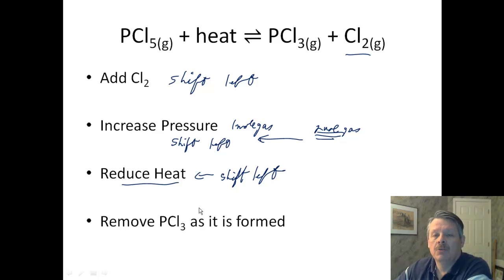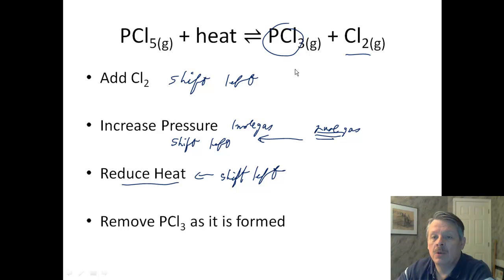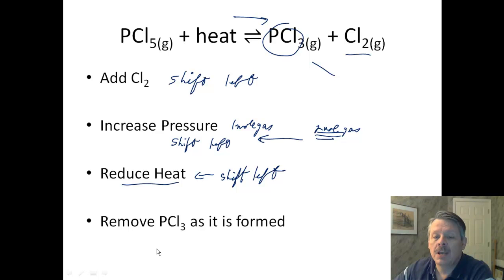Remove PCl₃ as it's formed — so we take it out. If we remove it, then we need to produce more of it. So this is the only one here where we shift to the right.